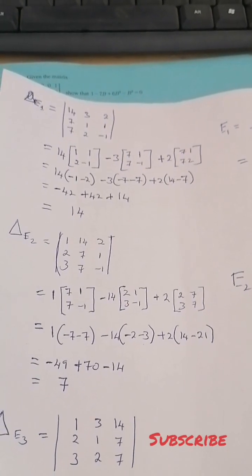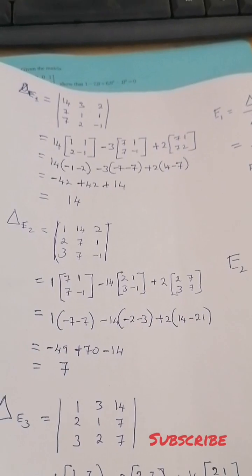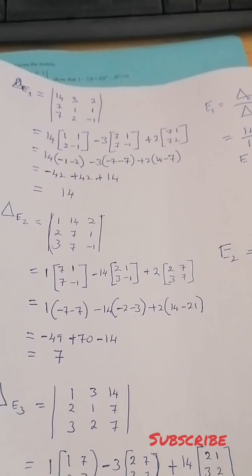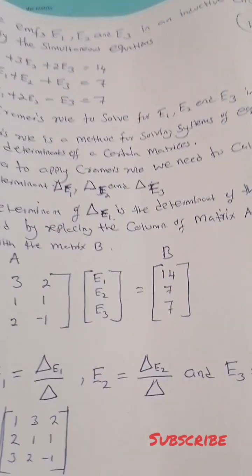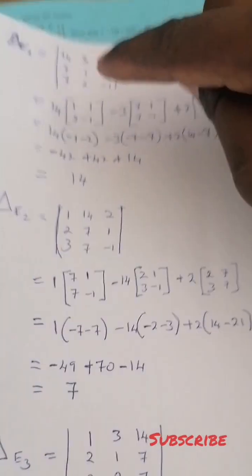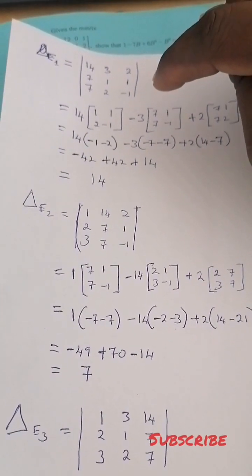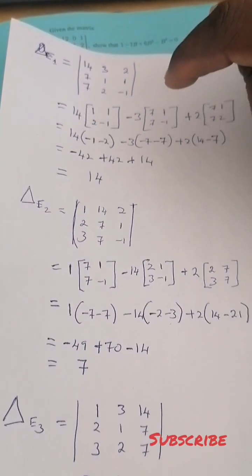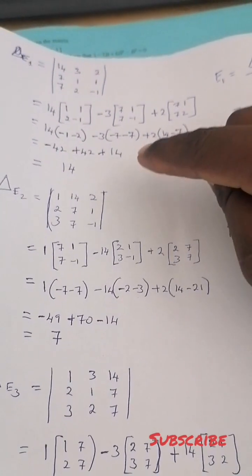Now find the determinant of A1, for E1. You replace the coefficients of E1 with the matrix of constants B: 14, 7, 17, with the other columns remaining as 3, 1, 1, 2, 1, negative 1. When you solve it, you get the determinant of A1.